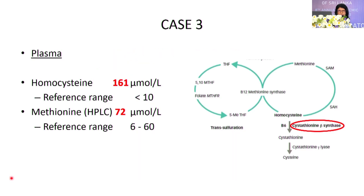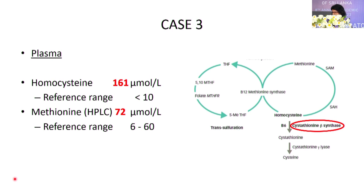Homocysteine was measured using general biochemistry analyzers in our laboratory. Methionine levels were also high. Both homocysteine and methionine are elevated in the trans-sulfuration pathway. Homocysteine to cystathionine is the trans-sulfuration pathway, which requires B12 and folic acid as co-factors. This is a diagnosis of cystathionine beta-synthase deficiency.